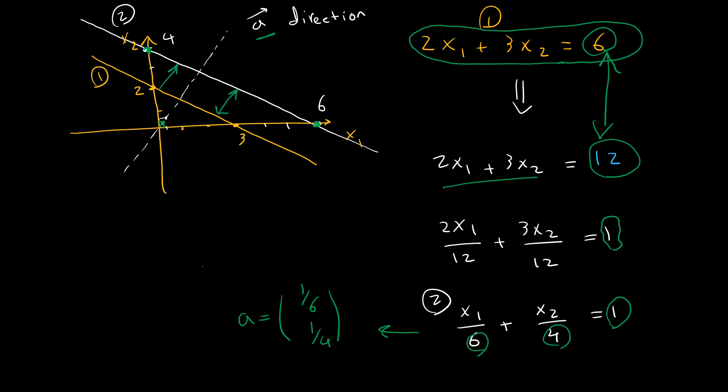Now I want to find the distance between these two hyperplanes. By distance, I mean this perpendicular distance along the direction of a. To get the distance, I need two points—one on each hyperplane—but I cannot pick arbitrary points; there are two special points.